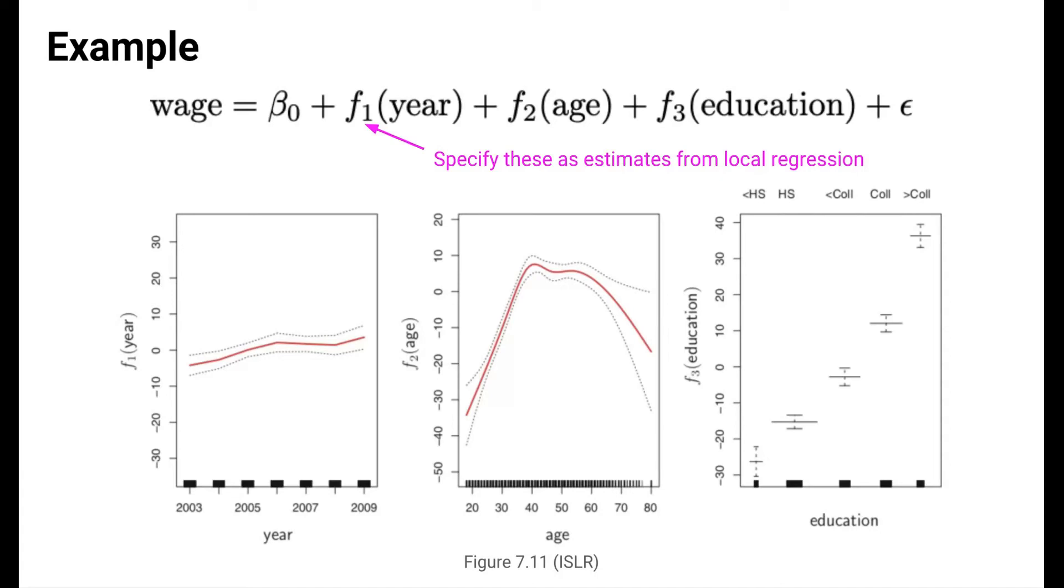Recall that in multiple linear regression, coefficients for individual predictors are interpreted while holding constant the other variables. The same is true for GAMs. The left plot shows the relationship between wages and year, holding constant an individual's age and education level. We see that, on average, for individuals with a fixed age and education level, wages increase over the years.